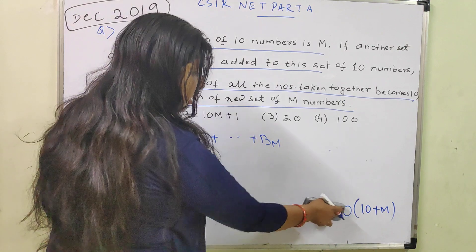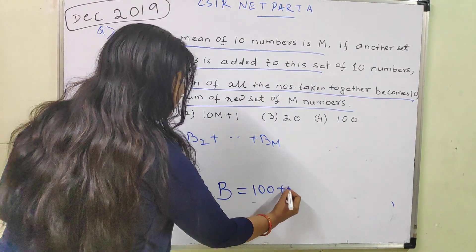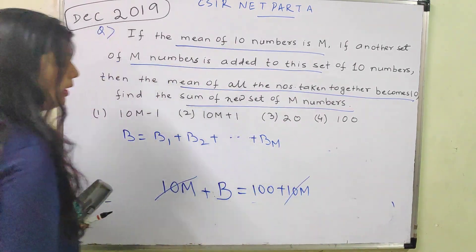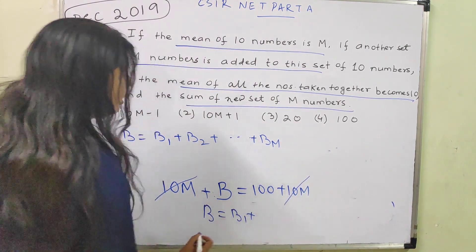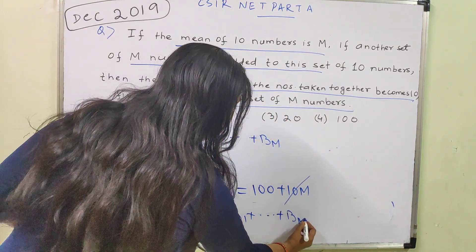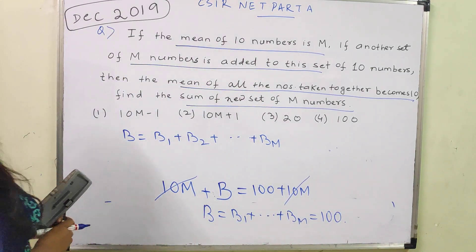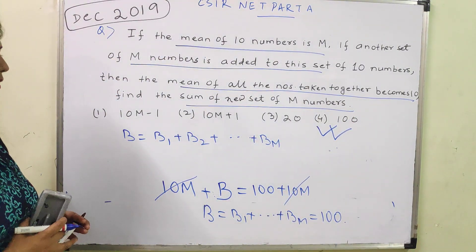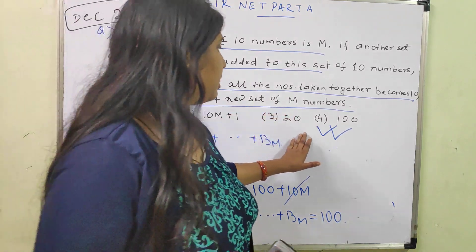Expanding the right side: 10 into (10 plus M) equals 100 plus 10M. The 10M terms cancel from both sides, and we get B equal to 100. The sum of the new set of M numbers is equal to 100. This is available in the option list — the fourth option is the correct answer. Sum of all the new M numbers equals 100.